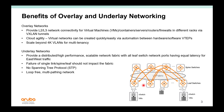For the underlay networks, we recommend a leaf and spine topology, where the leaf switches connect to every spine switch. The spine switches function as an aggregator to connect all the leaf switches. Note that the spine switches are not connected to each other. This provides a distributed, high-performance, scalable network fabric with equal latency for east-west traffic. From one leaf to another leaf, it is basically two hops away through any spine switch.